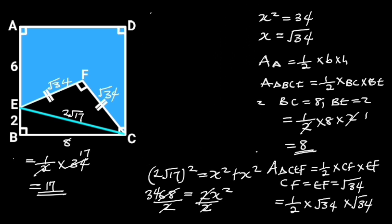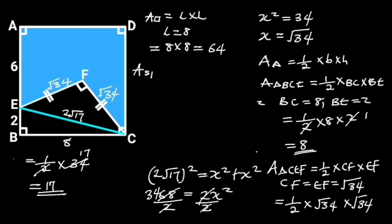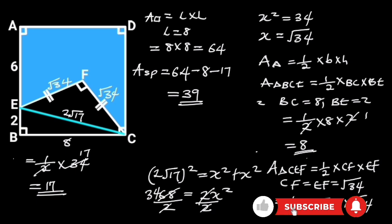Next, let's find the area of square ABCD. The area of a square is equal to length times length, where the length is equal to 8. So the area of the square is equal to 8 times 8, which is equal to 64 square units. Now, the area of the shaded portion is equal to the area of the square minus the area of triangle BCE minus the area of triangle CEF. That is 64 minus 8 minus 17, which is equal to 39 square units. If you like this video, make sure to subscribe for more.